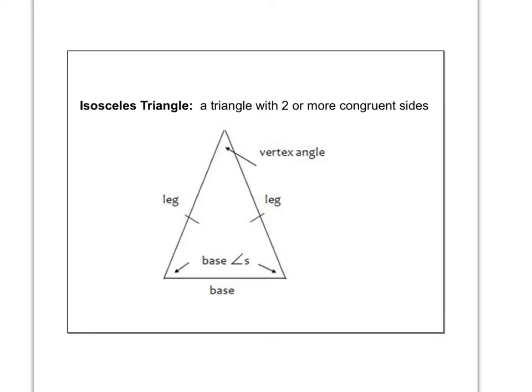Here's some vocabulary regarding isosceles triangles. Remember, an isosceles triangle has two congruent sides. Technically, the mathematical definition says two or more congruent sides, but we just go with two, because if it has more than two congruent sides, we call it equilateral.